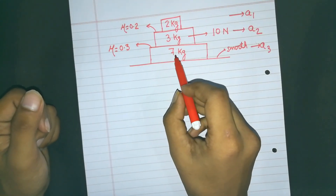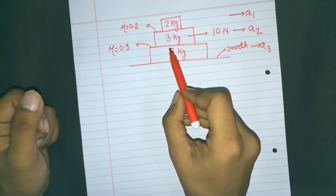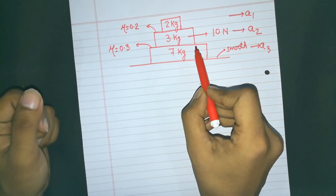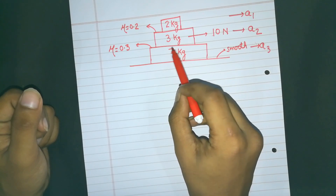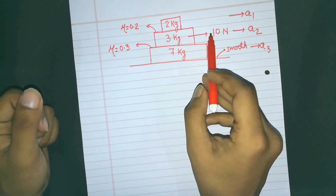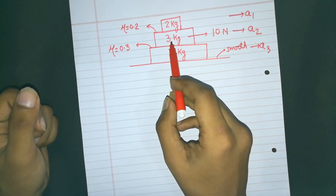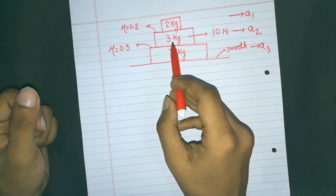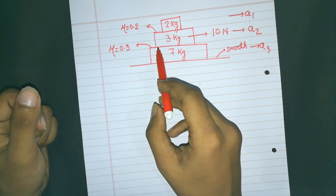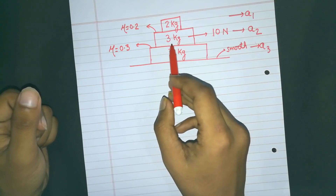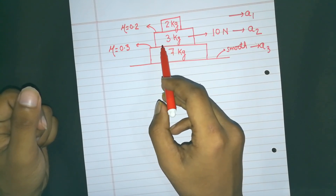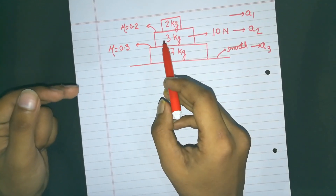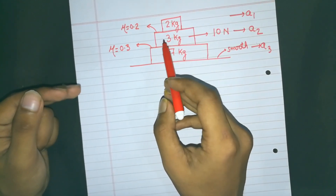We know that friction is a reaction force — it only acts to balance all other forces acting on the system. So friction will only act due to the reaction of some other force. There are 2 types of friction: static and kinetic. Static friction is normally less than or equal to the maximum static friction. So if static friction can balance the external force, kinetic friction will not act, meaning relative motion will not take place.